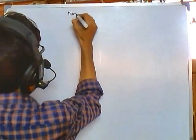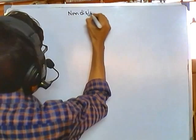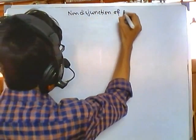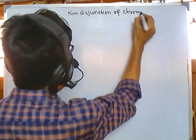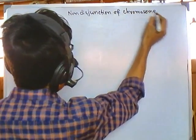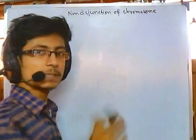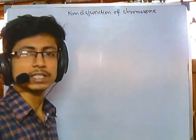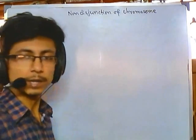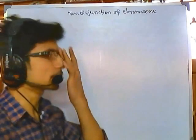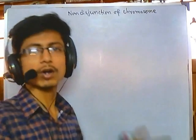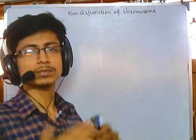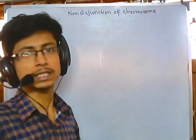Let us talk about non-disjunction of chromosome. Whenever we talk about non-disjunction of chromosome, that means the failure for the disjunction of chromosome during cell division. It could be mitosis or meiosis, both types of cell division. There can be mistakes of chromosome segregation during cell division.